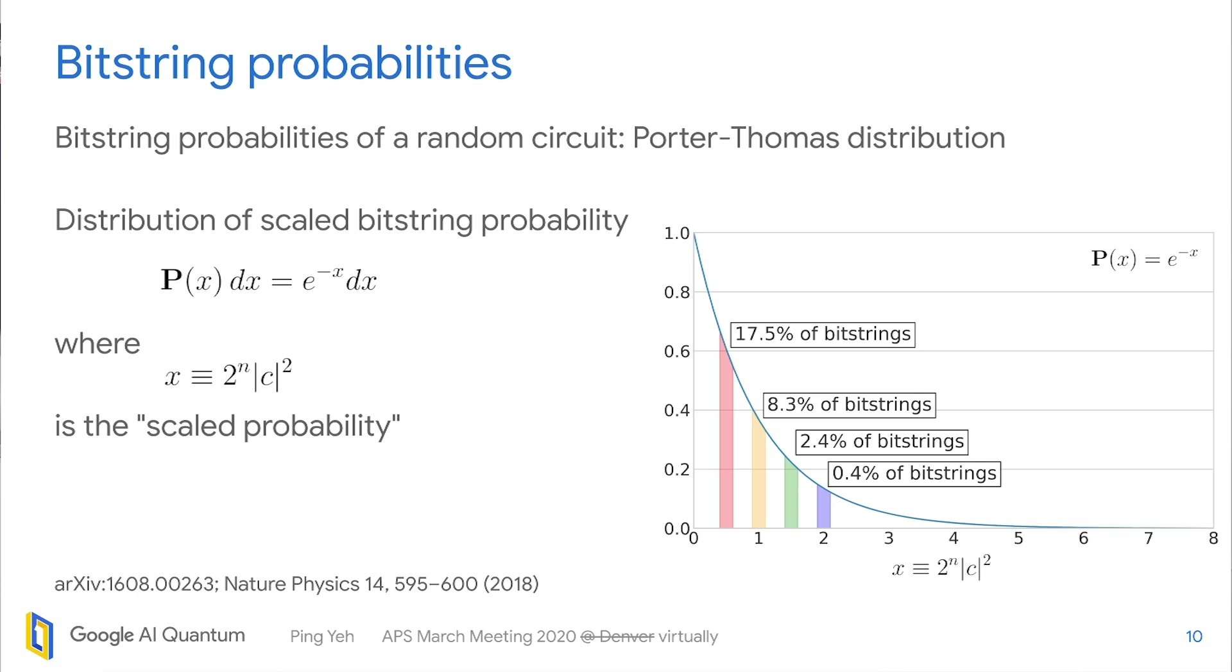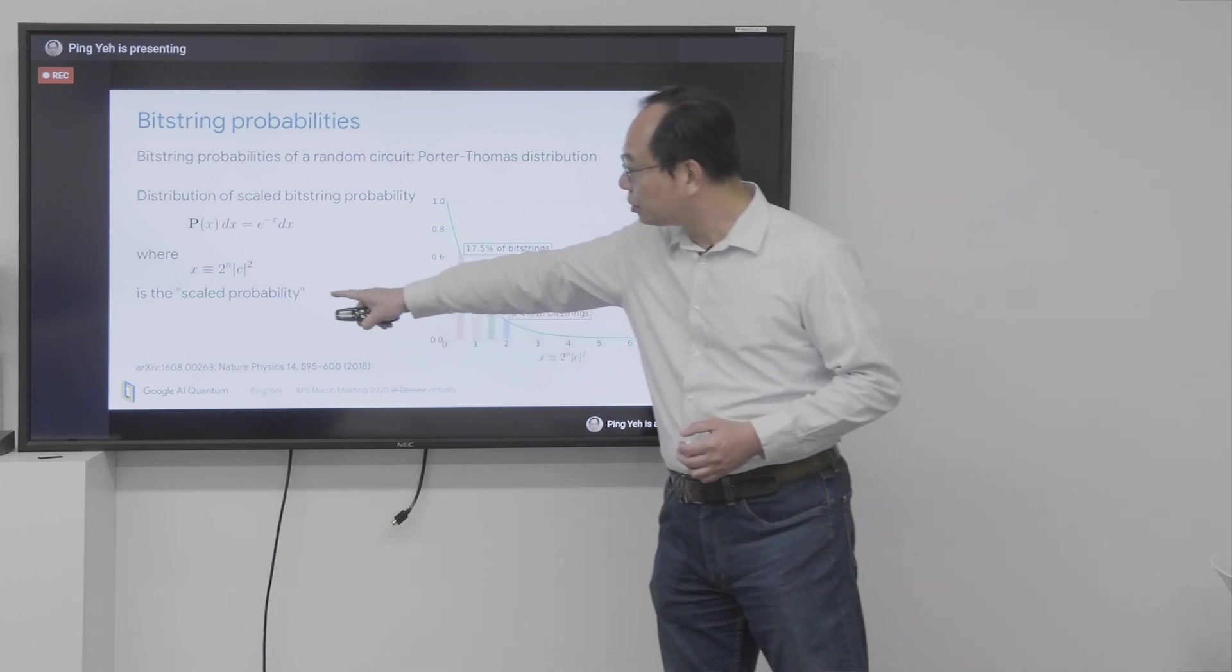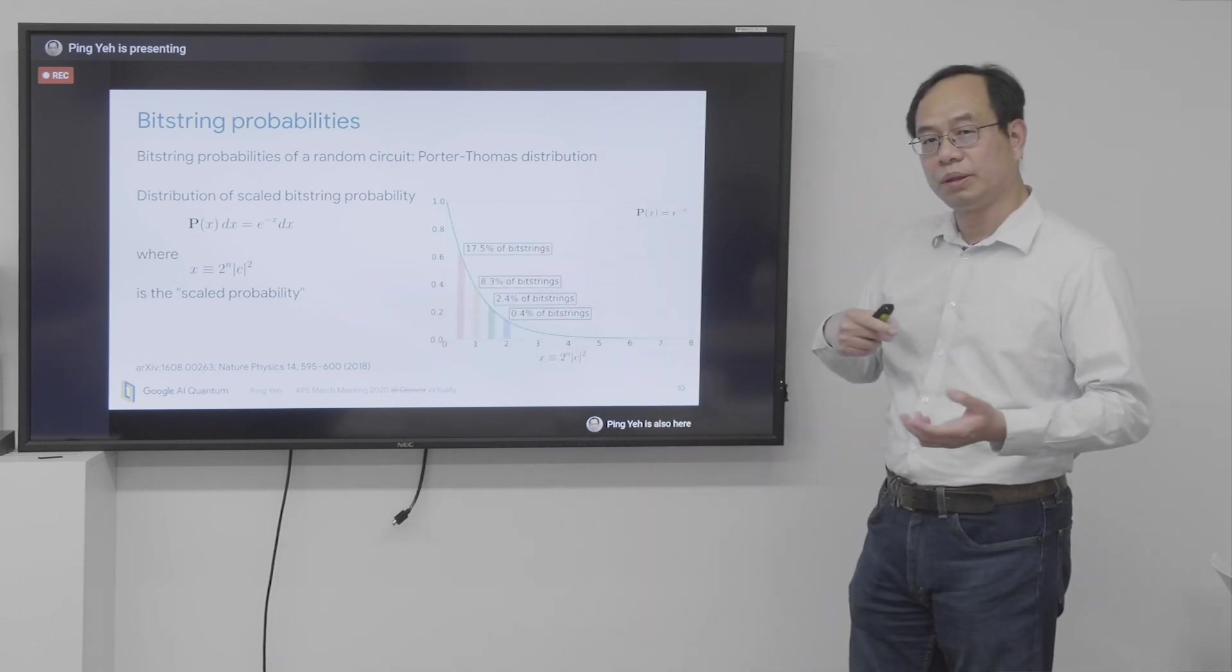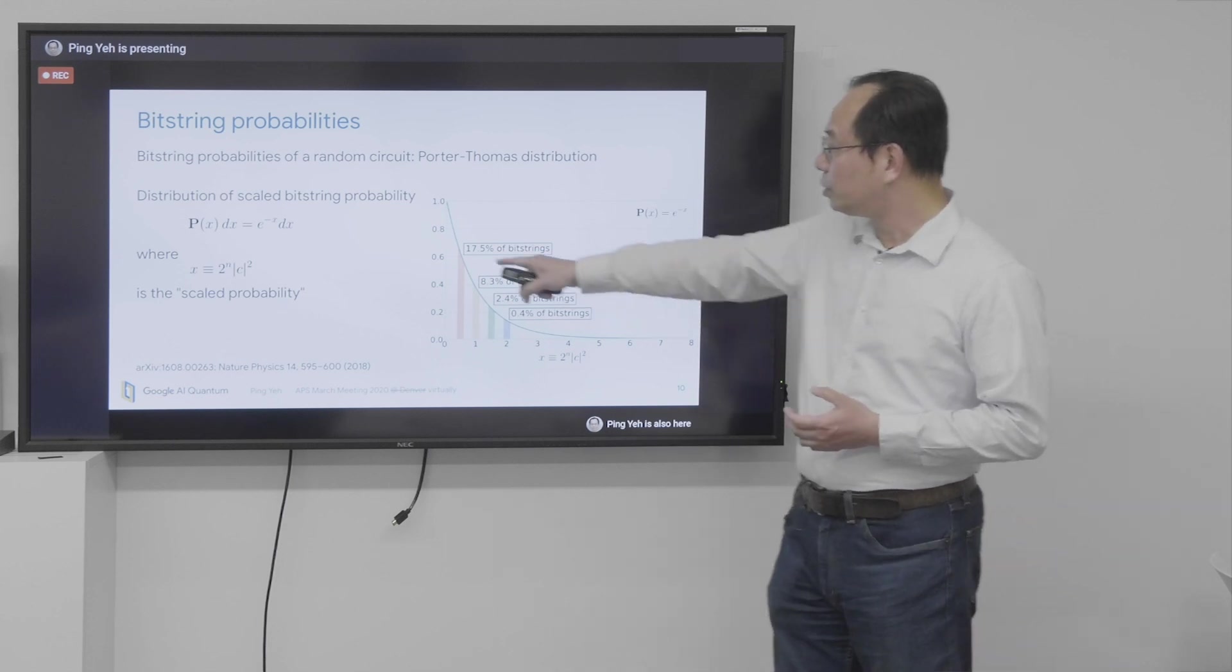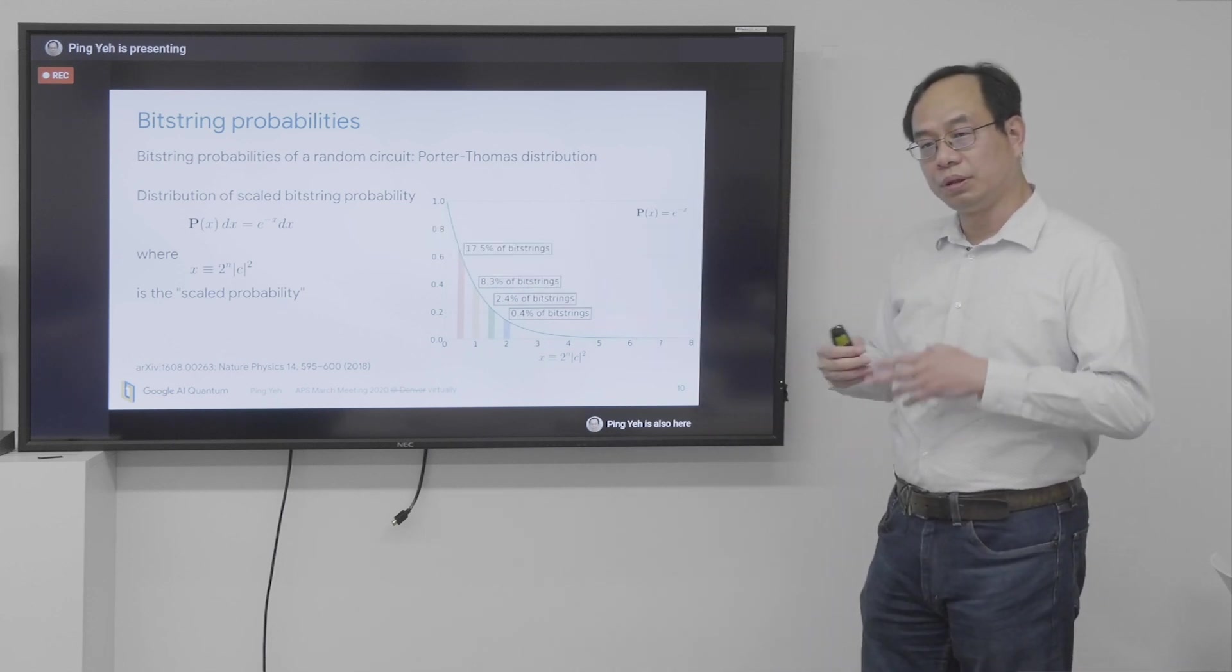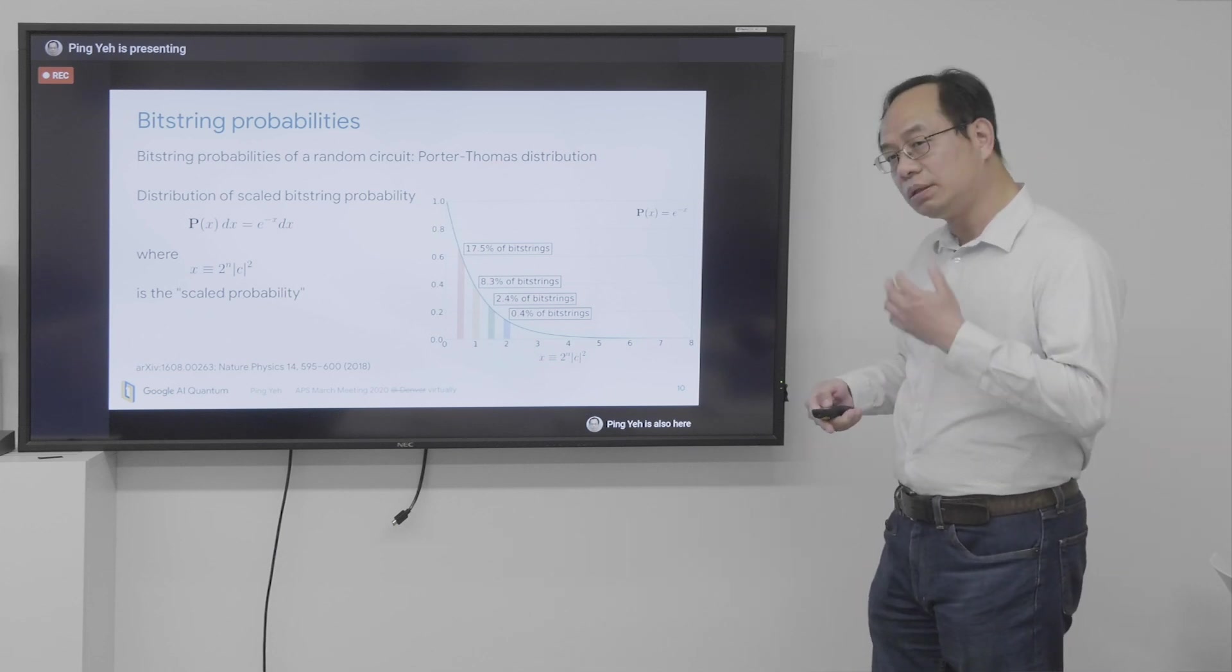And for random circuit, those probabilities actually follow a distribution, so-called Porter-Thomas distribution. And here I'm using a variable called scaled probability, which is the dimension of Hilbert space times the probability itself. Then the distribution becomes very simple. It's an exponential distribution, which is independent of the number of qubits. It's easier to analyze.